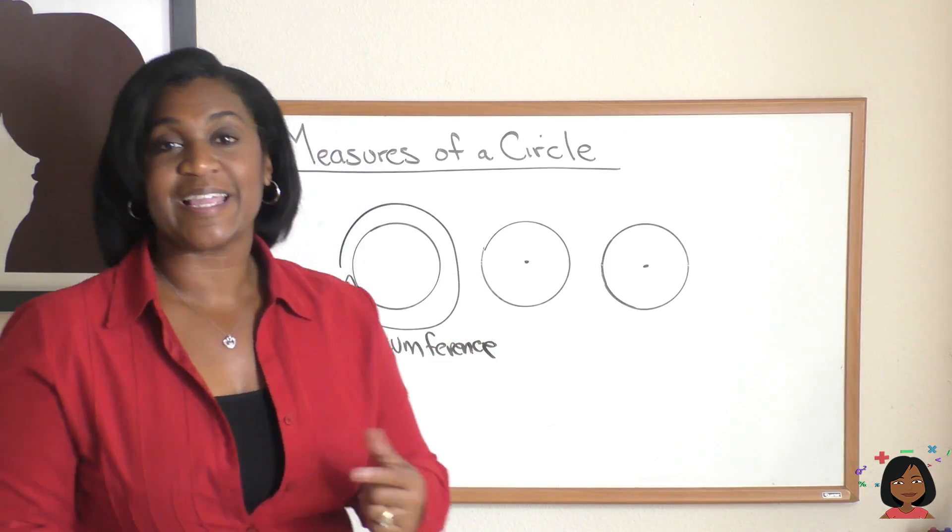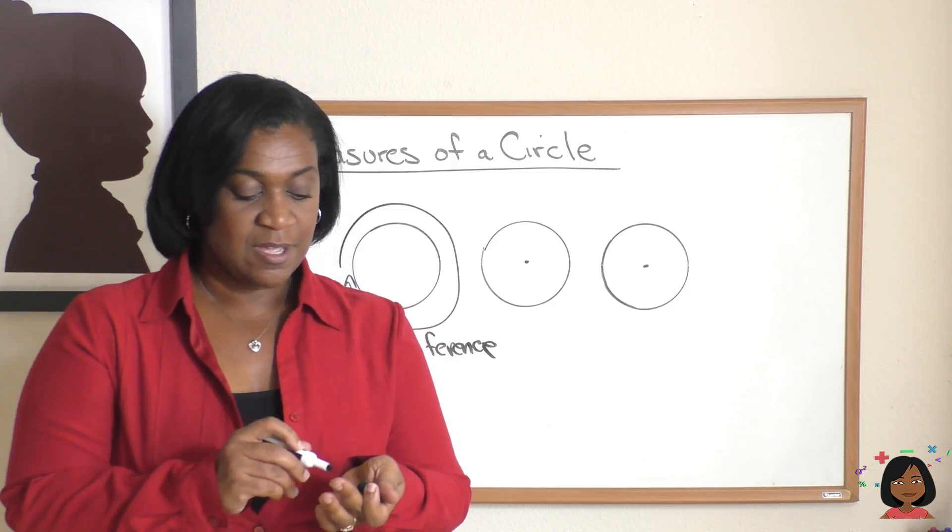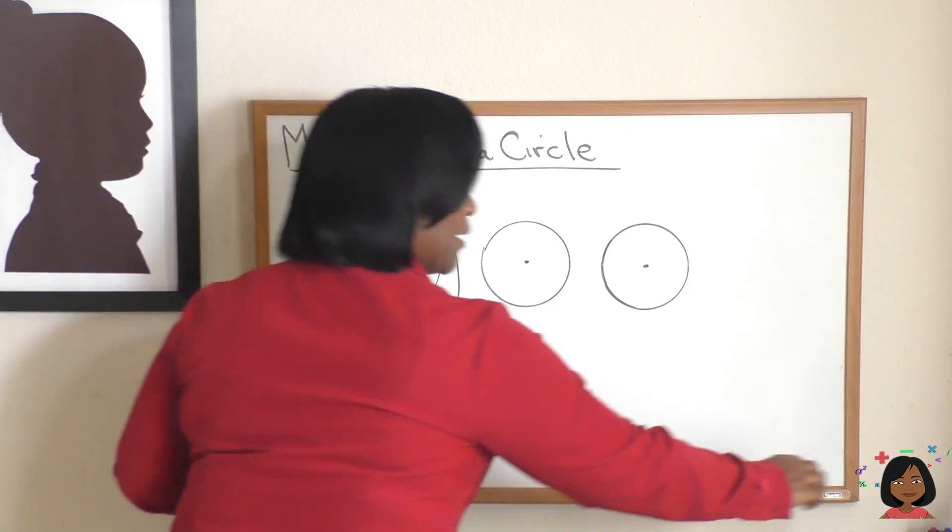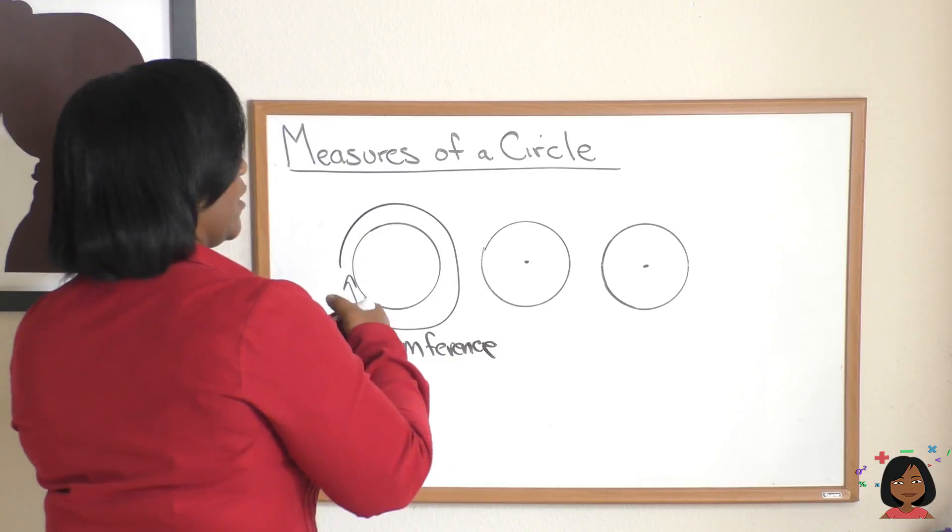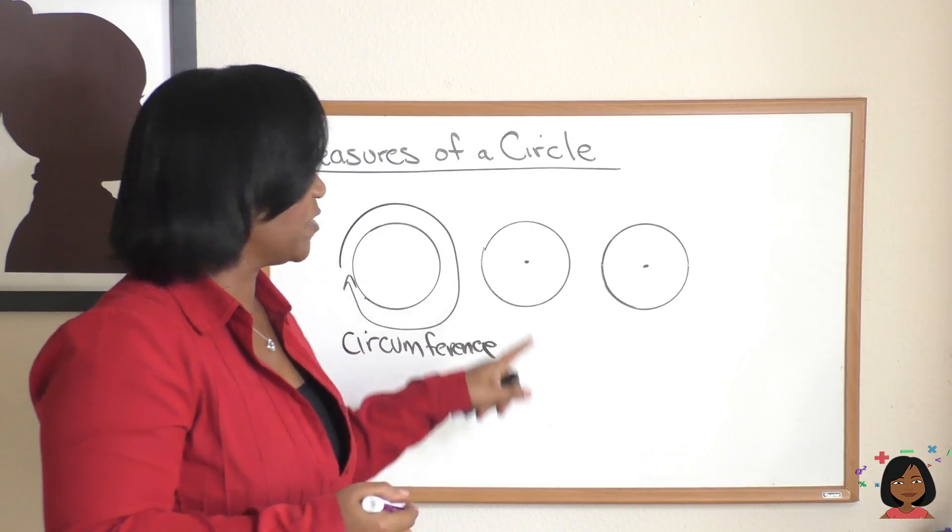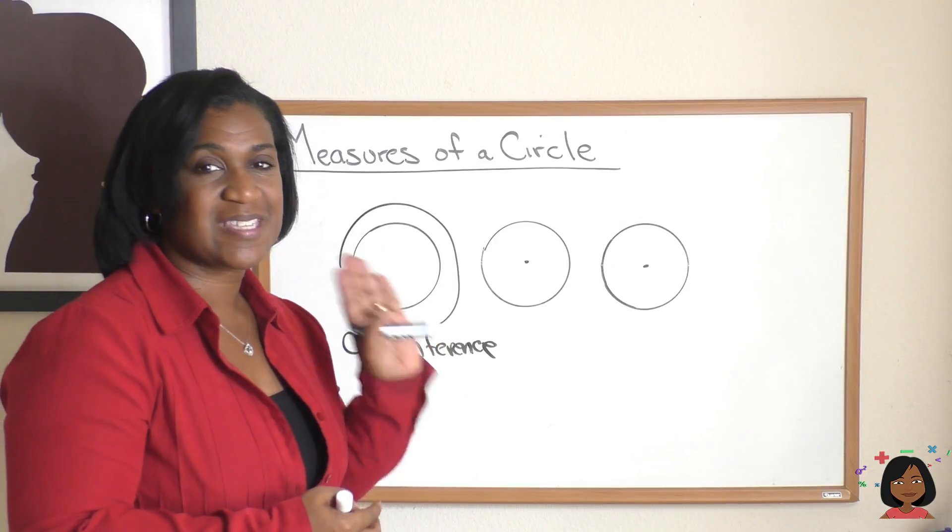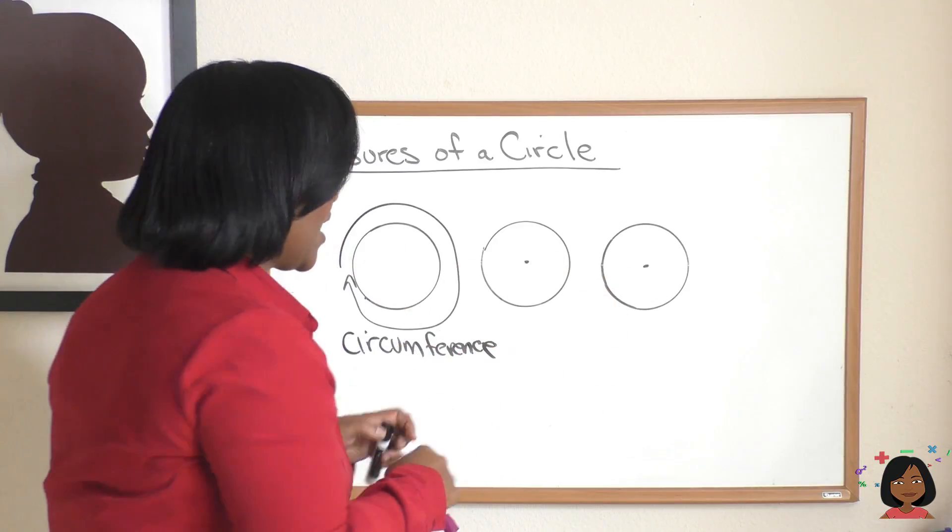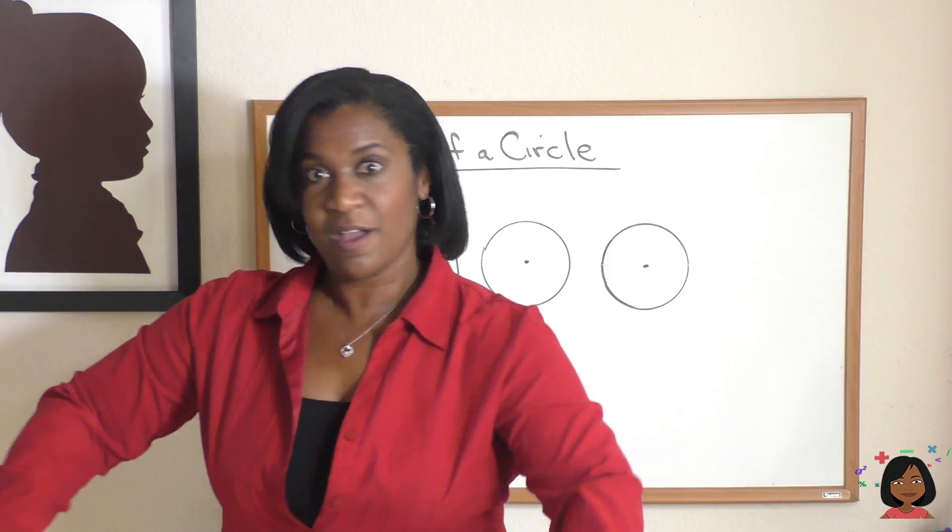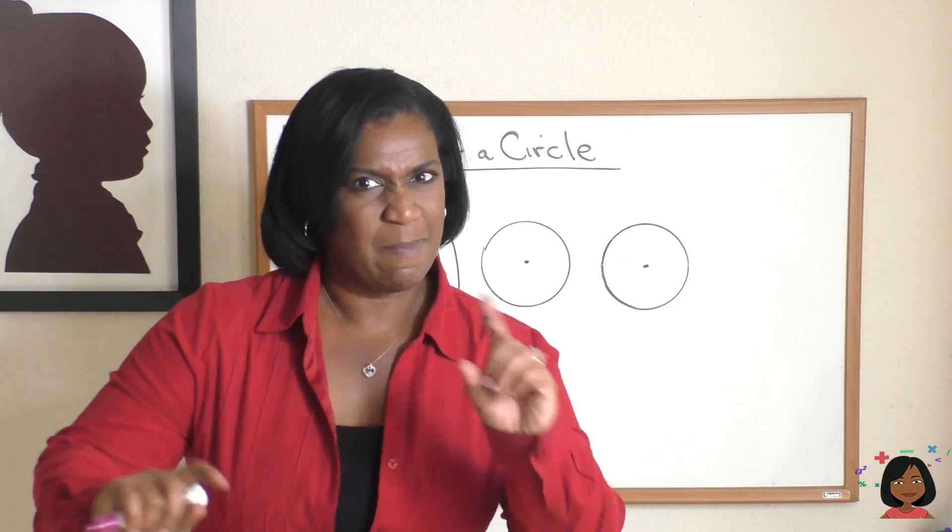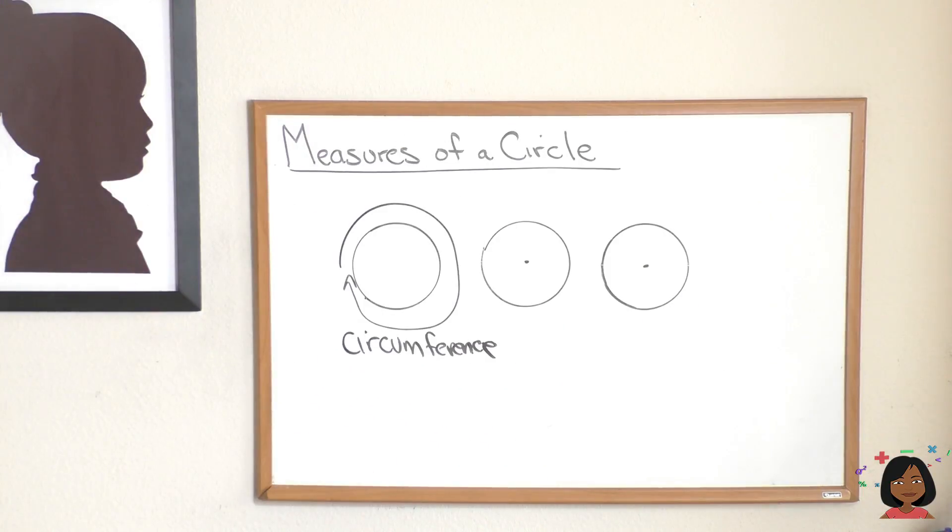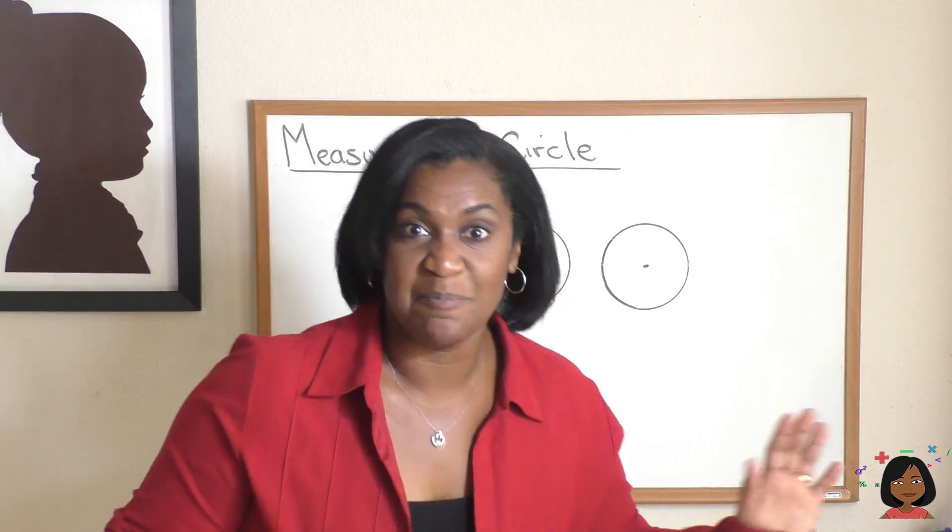Now, you'll notice my second circle, I have a dot in the middle. I'm going to get a colorful marker here, and if we were to measure, this is the center of my circle, so if I was to measure the center to the outside of a circle. Hold on one second, I got to get my ruler.